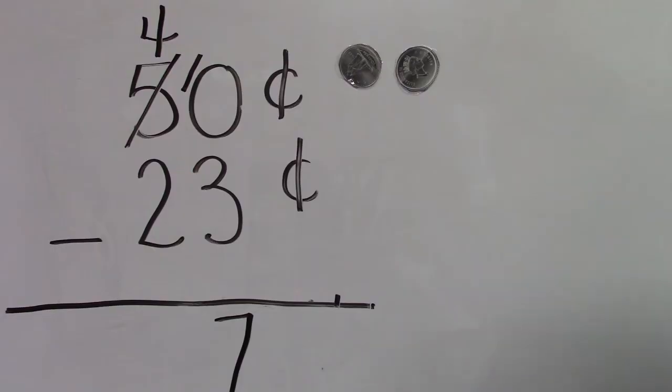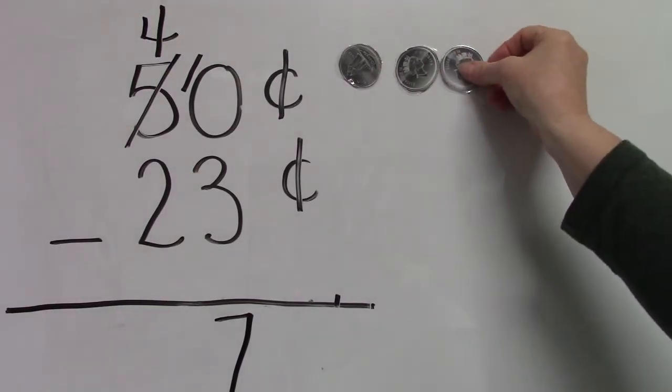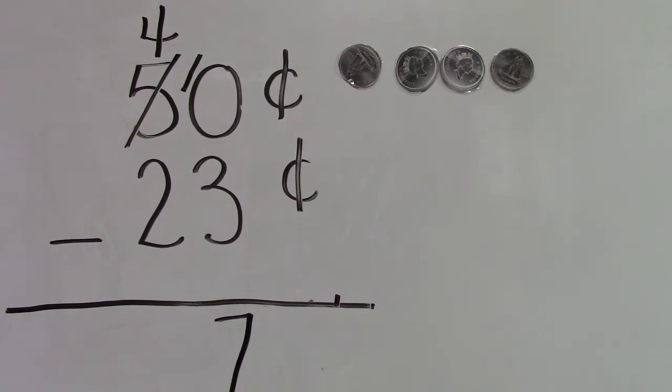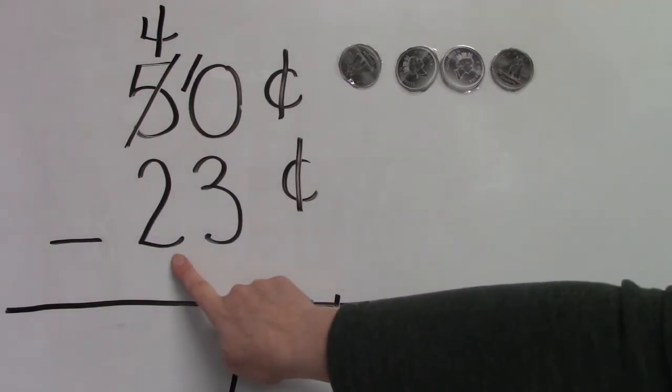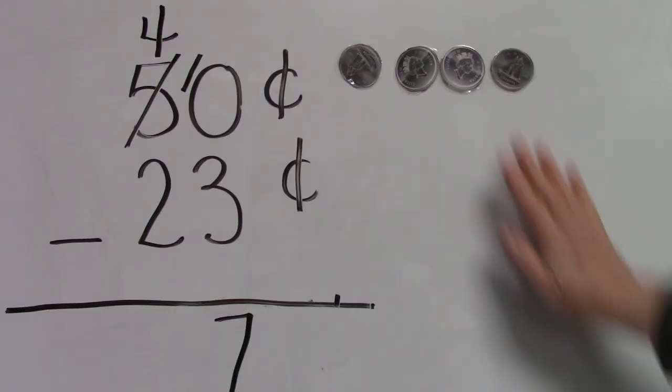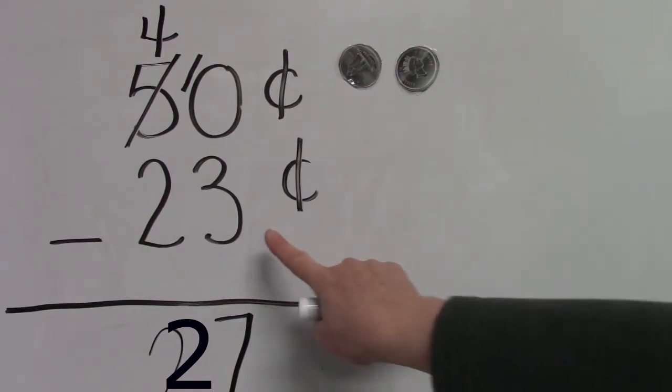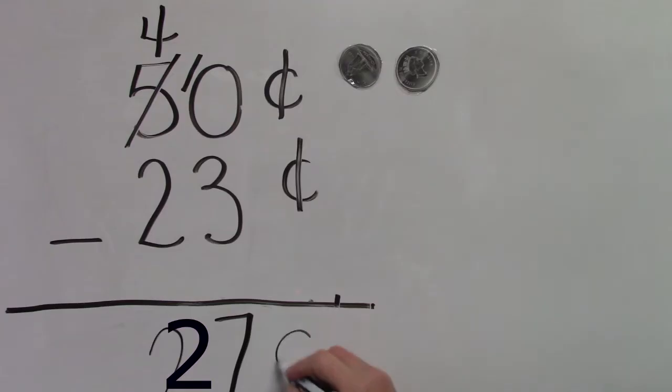We have four dimes. Why do we have four instead of five? Do you remember that we traded one of those dimes for ten pennies? Well now we are gonna subtract two dimes from our four remaining dimes. How many dimes do we have now? Two. Fifty cents take away twenty-three cents equals twenty-seven cents.